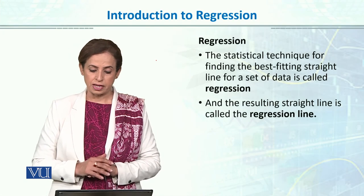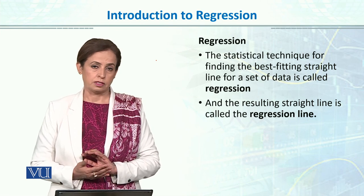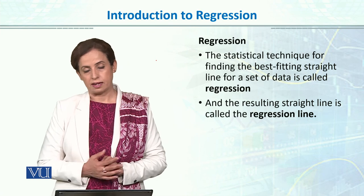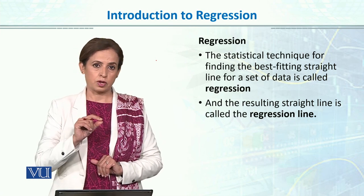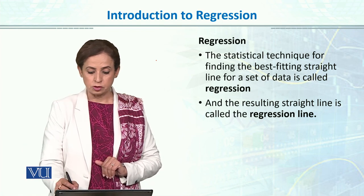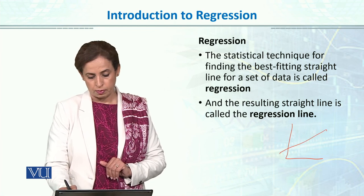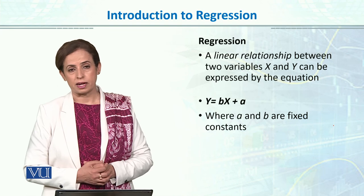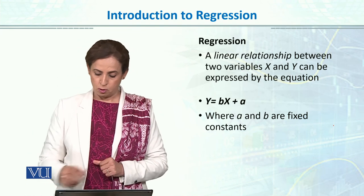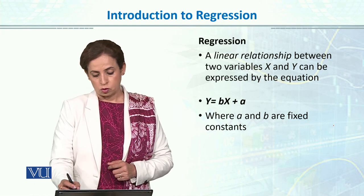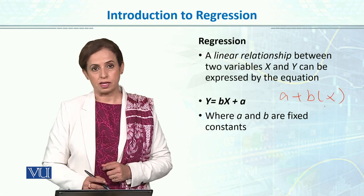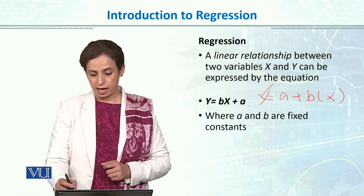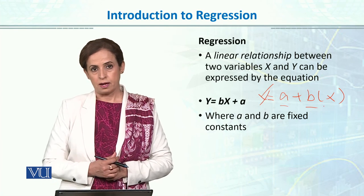Regression is a statistical technique for finding the best-fitting straight line for a set of data. The resulting line we draw — the straight linear line — is called the regression line. The regression line always describes a linear relationship because we find it over a straight line. The equation we use going forward will be linear, meaning all our predicted scores will fall on a line. The equation for the regression line is: y = bx + a, which in many books is also written as a + bx — both are the same. Here, x is our independent variable and we have to predict y from it.